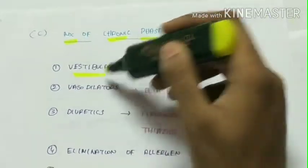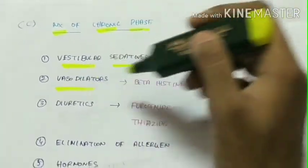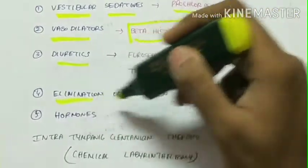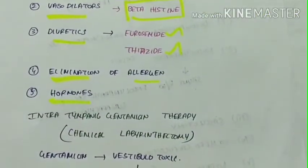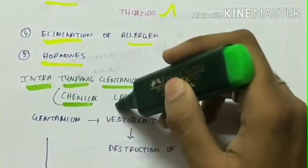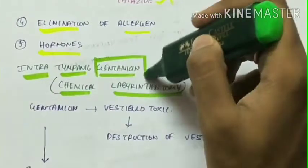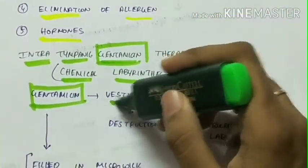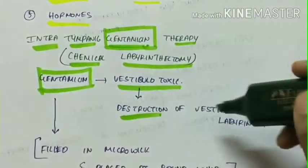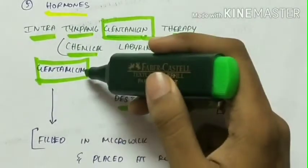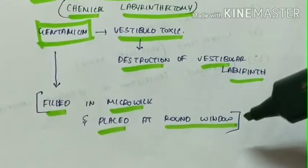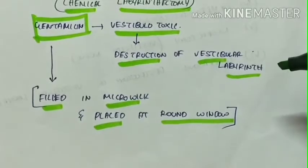Management of chronic phase includes: giving vestibular sedatives like prochlorperazine, vasodilators like betahistine, diuretics like furosemide and thiazide, elimination of allergen and hormones. Chemotherapy can be used like intratympanic gentamicin therapy which is chemical labyrinthectomy. Here gentamicin, which is an antibiotic, is used which is vestibulotoxic. This is instilled intratympanicly. So this vestibulotoxic gentamicin causes destruction of the vestibular labyrinth. The gentamicin is filled in microwick and it is placed at the round window through which it is absorbed into the membranous labyrinth.